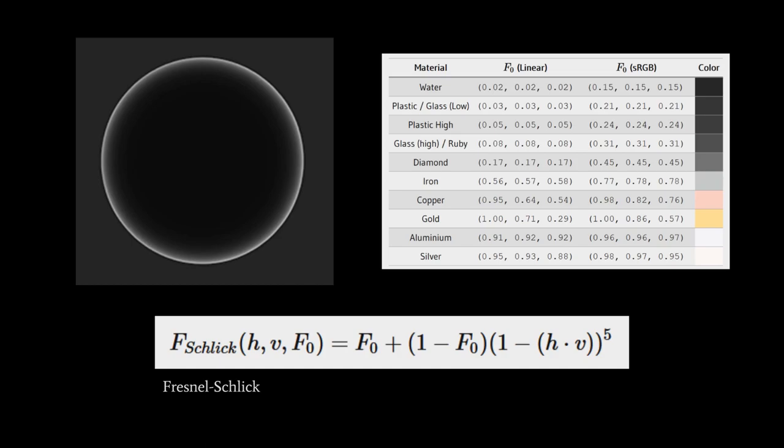In contrast, for a metal like, say, silver, where the R component is 0.95, well, regardless of the H and V value, the R component output of this formula is going to be 0.95 plus a little something. The larger the base reflectivity, the less H and V is going to matter.